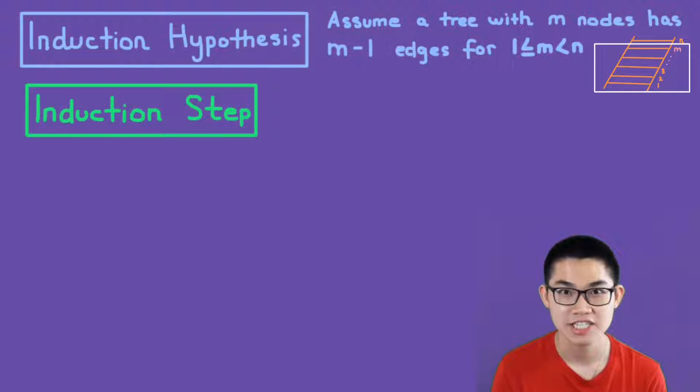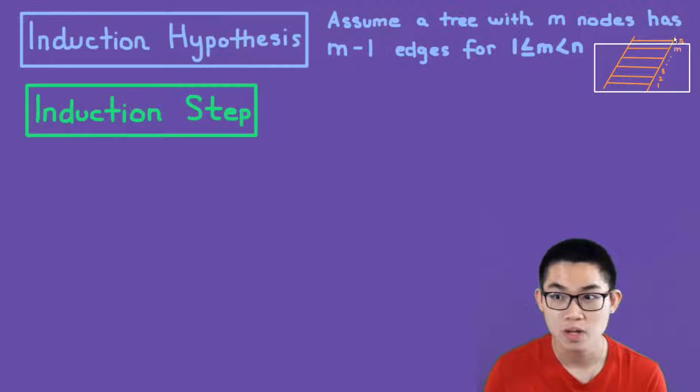The third step is the induction step. So what exactly does this step do? Well, in the previous step, we showed that the statement is true within this range, so within this box from 1 to m. The induction step basically just shows that the statement is also true outside this box. So we're showing that this statement is true when we have n nodes, so outside this box.